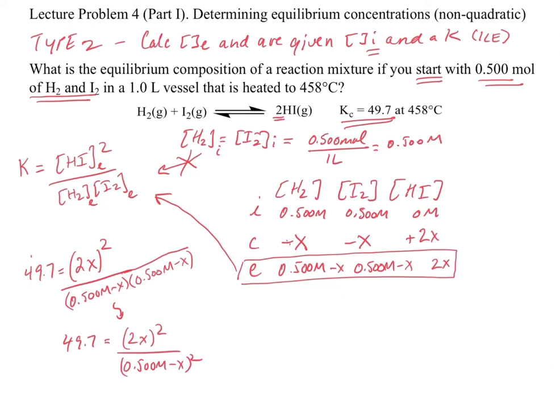When you have the two concentrations on the bottom being the same, this brings it into a squared term, making life a lot easier. Instead of having to do the quadratic, we can simply take the square root of the left and the square root of the right, and that gives us our possible solutions.